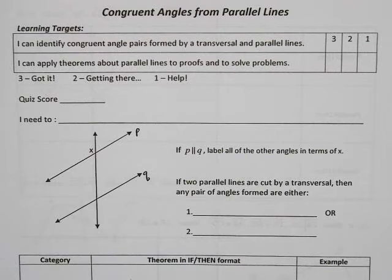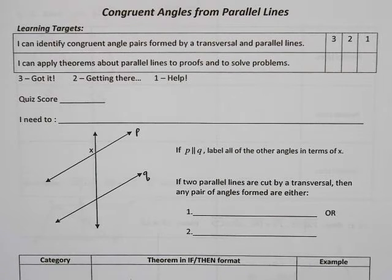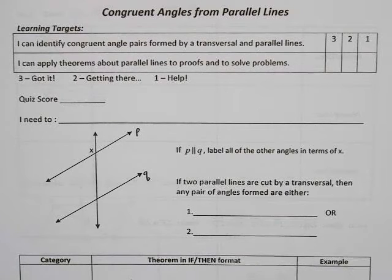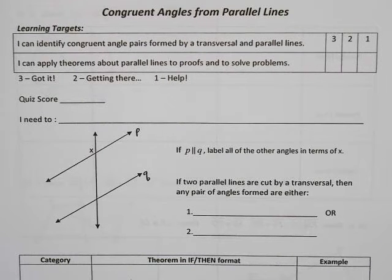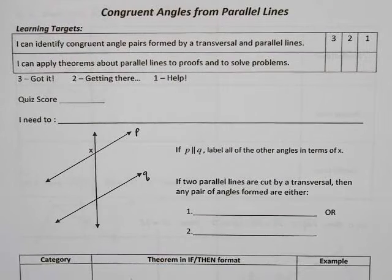Today's lesson is going to continue with this idea of congruent angles and parallel lines. In the last lesson we learned that if we had certain pairs of congruent or supplementary angles we could say the lines are parallel. Today, looking at the targets, we're going to go the other way — we're going to reverse those theorems and say that if we're starting with parallel lines then we should have these pairs of angles that are either congruent or supplementary.